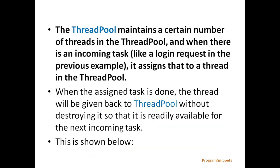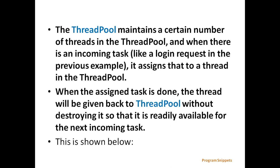The web server avoids creating and cleaning a thread for every request by making use of a thread pool. The thread pool maintains a certain number of threads, and when there is an incoming task, it assigns that to a thread in the pool. When the assigned task is done, the thread is given back to the thread pool without destroying it, so that it is readily available for the next incoming task, as shown below.